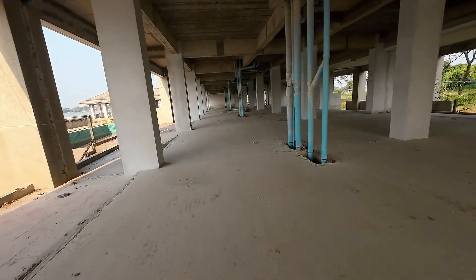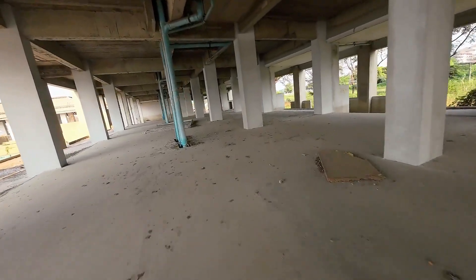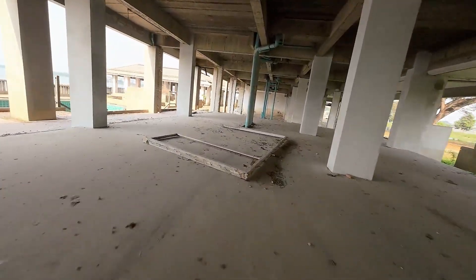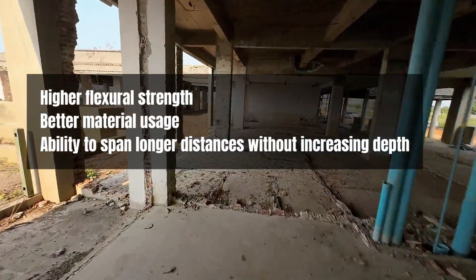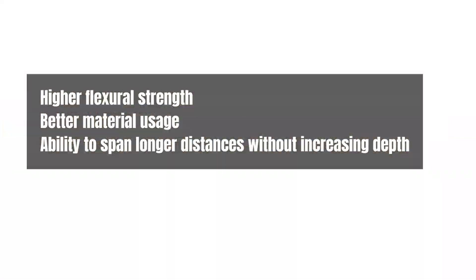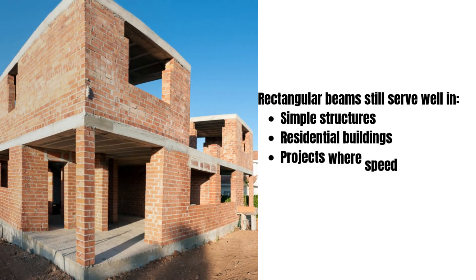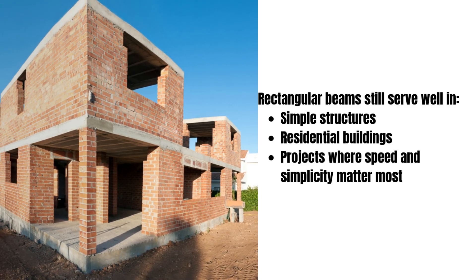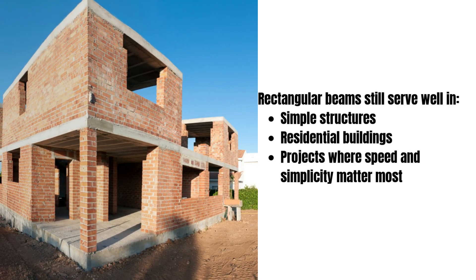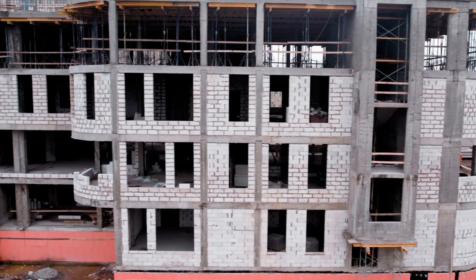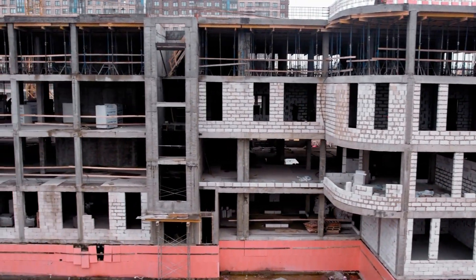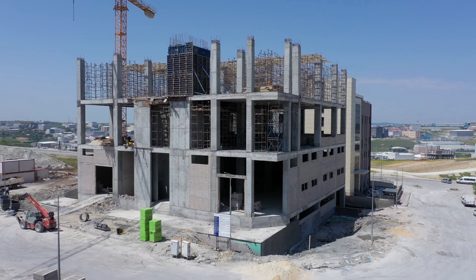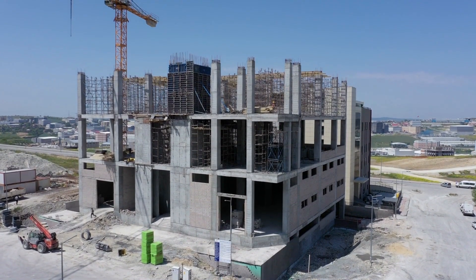T-beams provide a more integrated and efficient structural system where the slab and beam work together. They deliver higher flexural strength, better material usage, and the ability to span longer distances without increasing depth. Meanwhile, rectangular beams still serve well in simple structures and residential buildings where speed and simplicity matter most. If you are designing a floor system, bridge, or multi-story frame and want to improve load-carrying capacity, reduce concrete use, and maximize span with minimum depth, the T-beam is often the better choice. Rectangular beams still play a valuable role, but if your project calls for strength, efficiency, and modern construction techniques, don't overlook the T-beam.